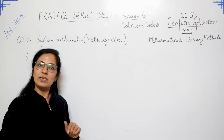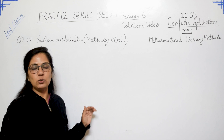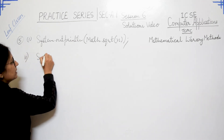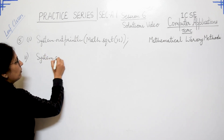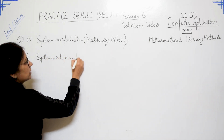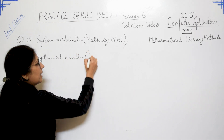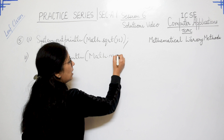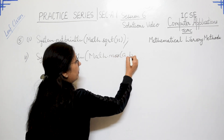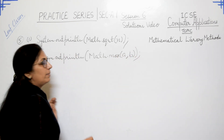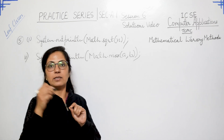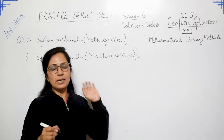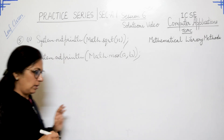Part two: to display the bigger number of two given numbers A and B. Again, display means use a print statement. Use Math.max function for finding the bigger of two numbers. Please don't use if-else logic here — write the syntax in one statement: System.out.println(Math.max(A, B)).